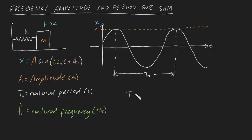By playing around with the equation of motion, you can derive two useful formulas. T n is equal to 1 divided by f n, and omega n is equal to 2 pi f n.